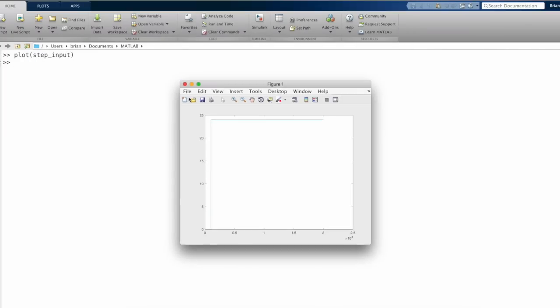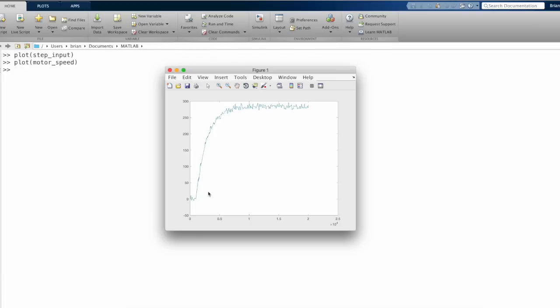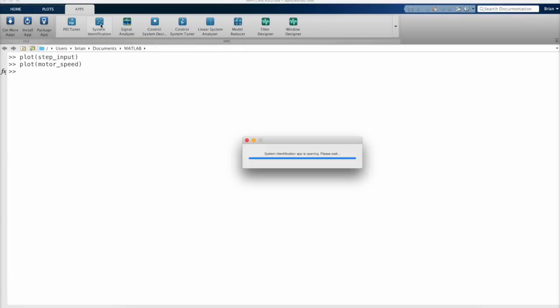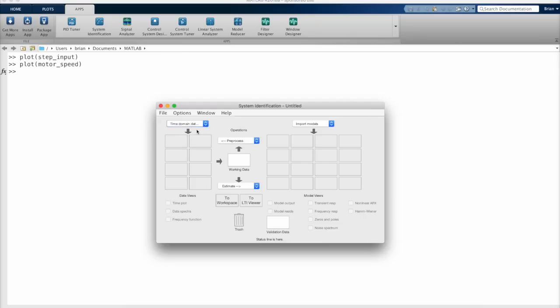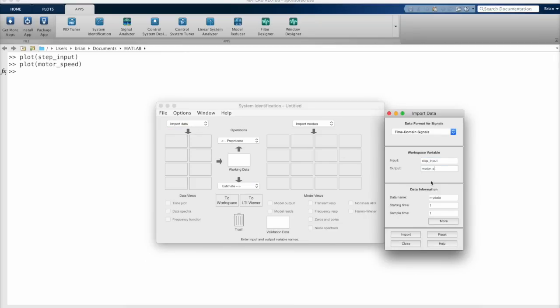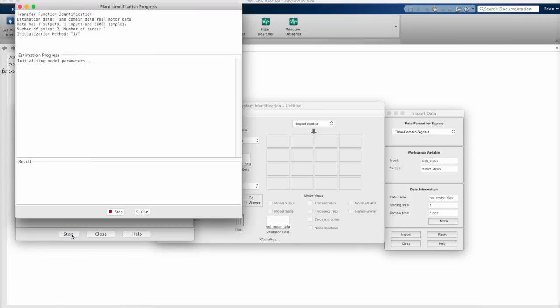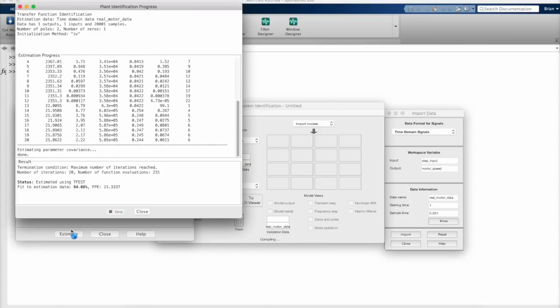Alright, with the step input and response output measured, I can use the system identification app to fit a model to this data. Now, the details on how to use this app are in the description of this video. But what you should take away from this is that there are existing system identification tools available to you. And these tools don't remove the need to understand how system identification works, they just make the whole process easier and faster.